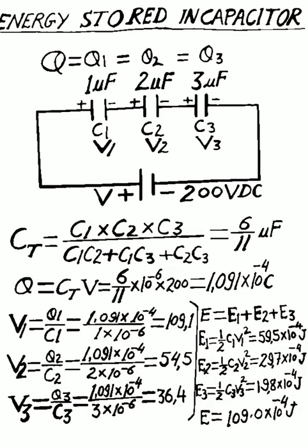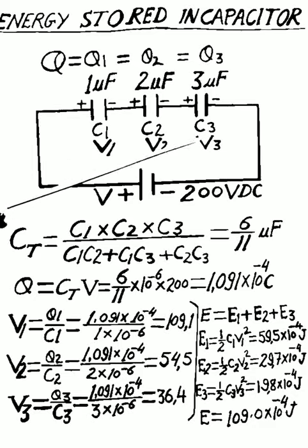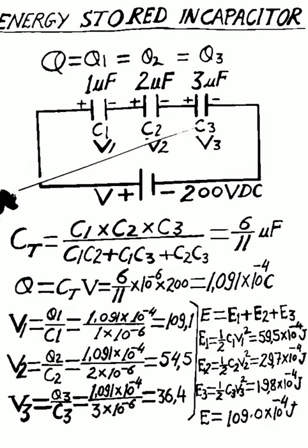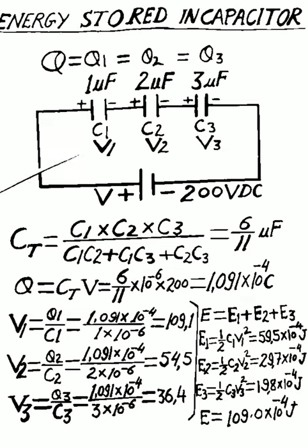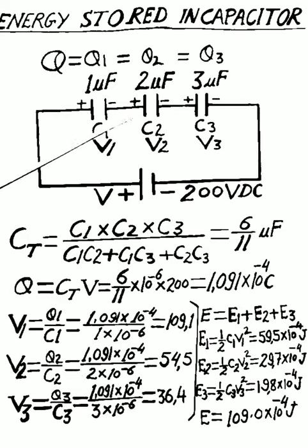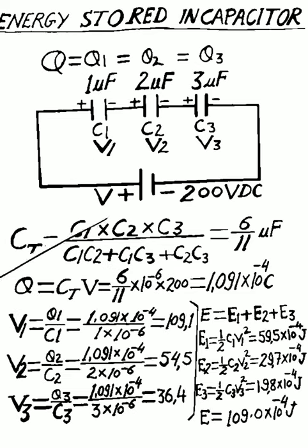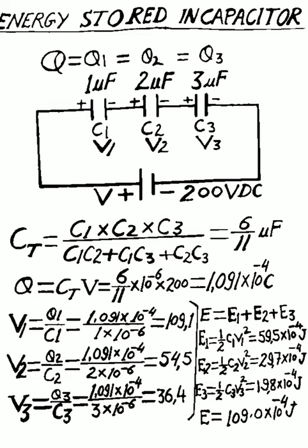Three series-connected capacitors C1, C2, and C3 are connected to a 200V DC supply. C1 is 1 microfarad, C2 is 2 microfarad, and C3 is 3 microfarad. V1, V2, and V3 are the voltages across each capacitor. Total voltage V equals 200V, equal to V1 plus V2 plus V3. Charge Q equals Q1 equals Q2 equals Q3.